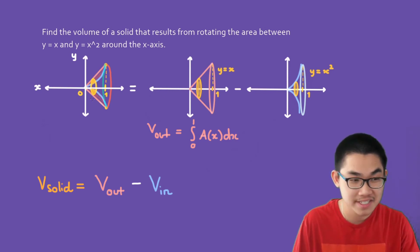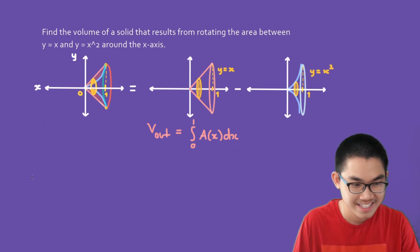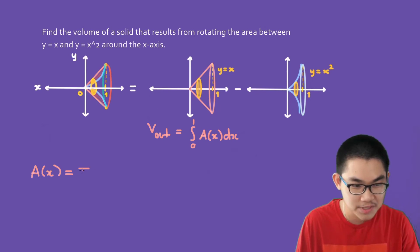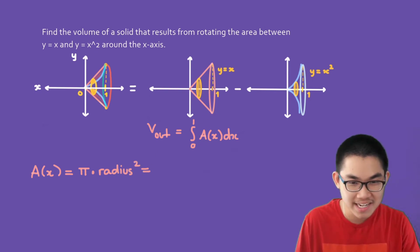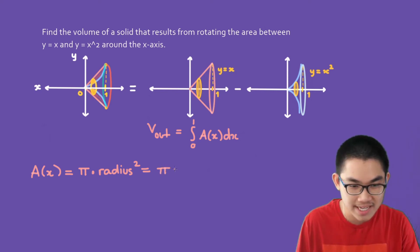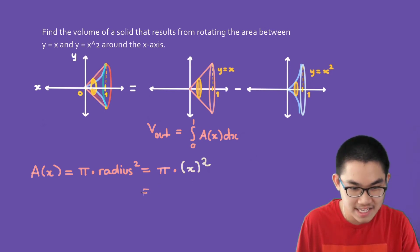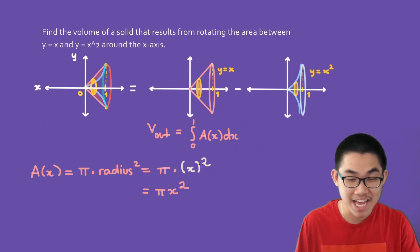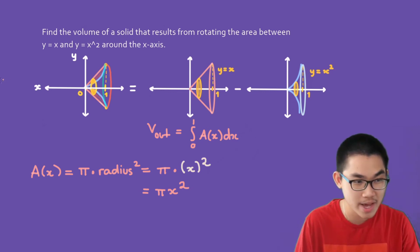The area of the circular cross section is pi times the radius squared. Looking at the picture, the radius goes from the axis to the function, which is just y. Since y equals x, we substitute x for the radius. So the area is pi times x squared. The next step is to substitute this back into the volume integral.